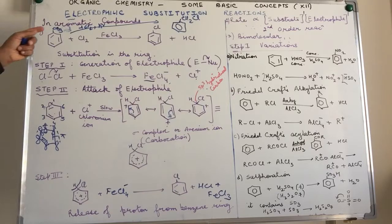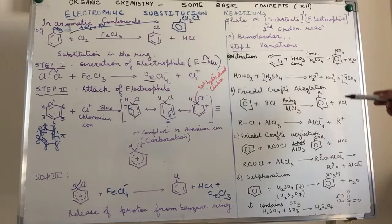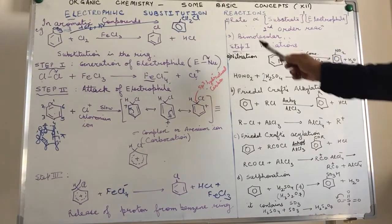It will follow the path of a free radical reaction mechanism, and substitution is taking place in the side chain. We have to see where the substitution is taking place. Substitution in the benzene ring involves electrophilic aromatic substitution. There are many examples of electrophilic substitution reactions.